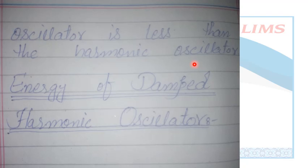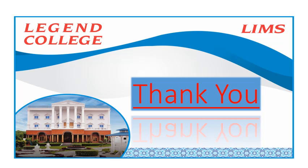In this lecture, we derived the equation of motion, discussed amplitude and its maximum value at t=0 and t=infinity, and found the frequency. The next lecture will cover the energy of the damped harmonic oscillator — its calculation and derivation. If anything was unclear, please discuss it. Thank you so much, Allah Hafiz.